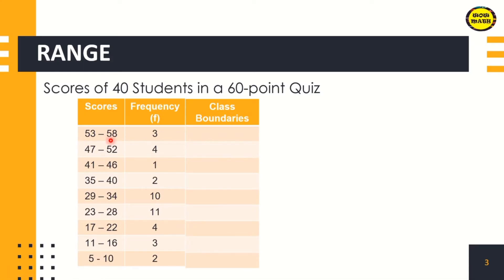Focus on the scores. All you need to do is subtract 0.5 on the lowest score in each class and add 0.5 on the highest score in each class. So, for example, in the first class, 53 minus 0.5 is 52.5. Then 58, the highest, plus 0.5, that is 58.5.